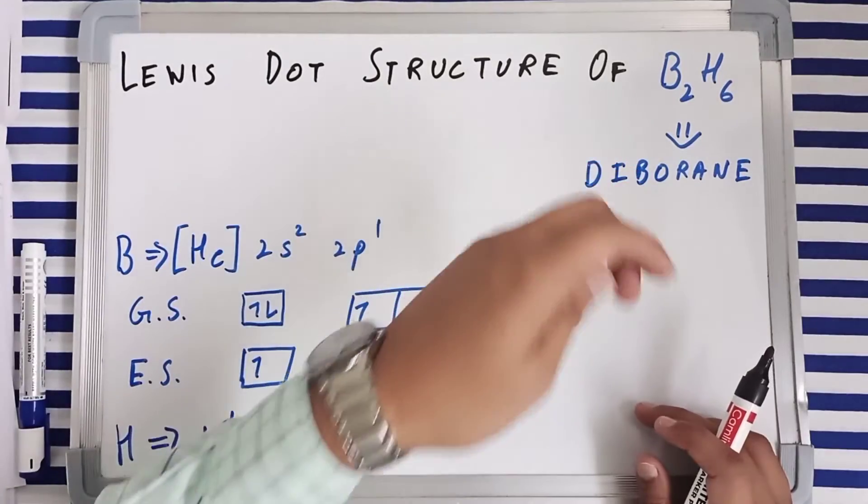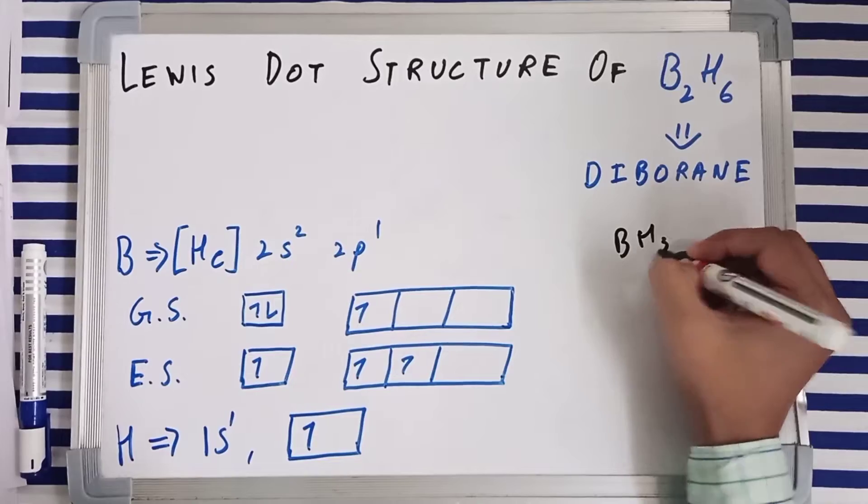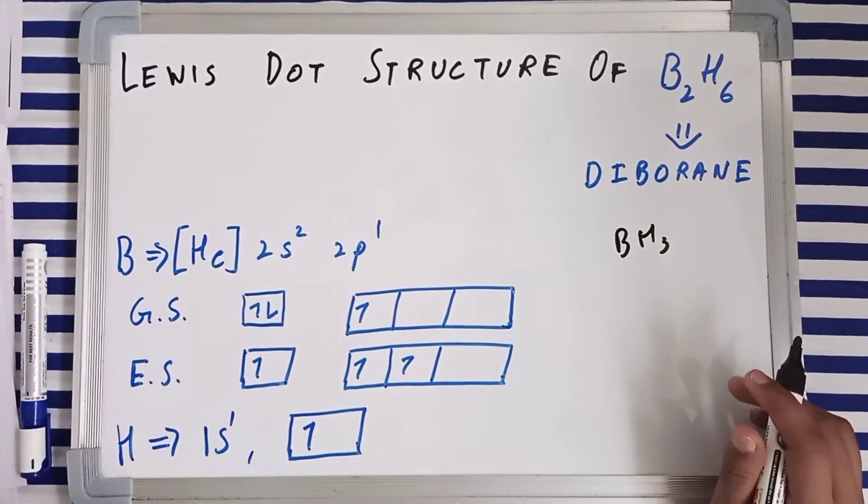Now diborane is made up of two borane molecules, which is BH3. So first we will dive into the structural part.